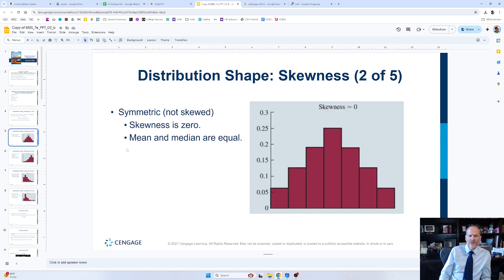So here is, the skewness here is zero. And the mean and median are equal. The mean in the middle, the median are equal here.